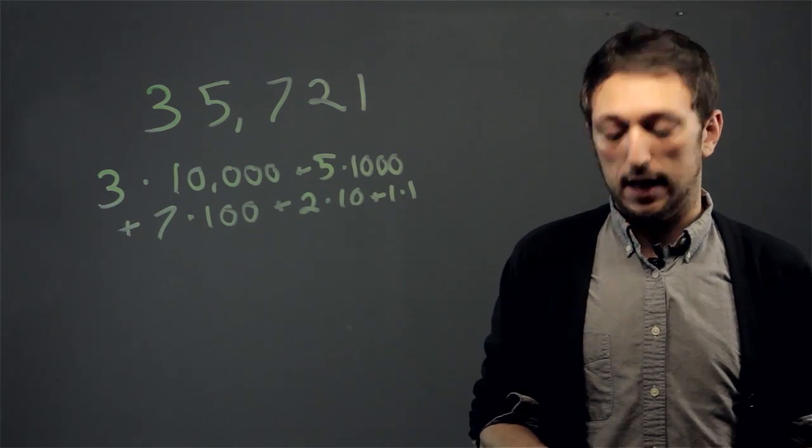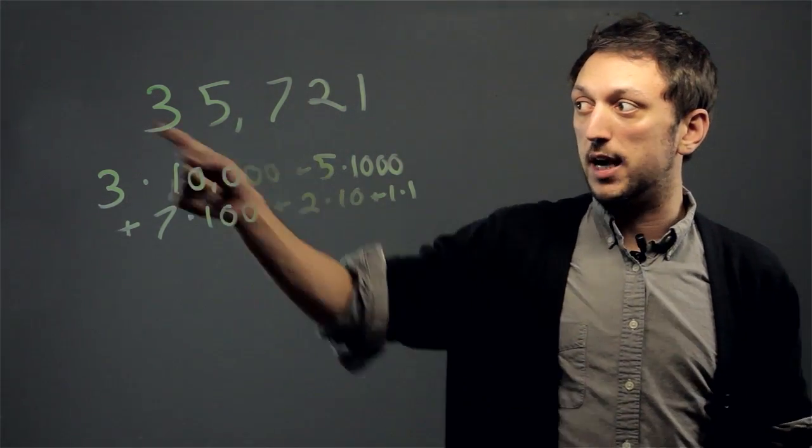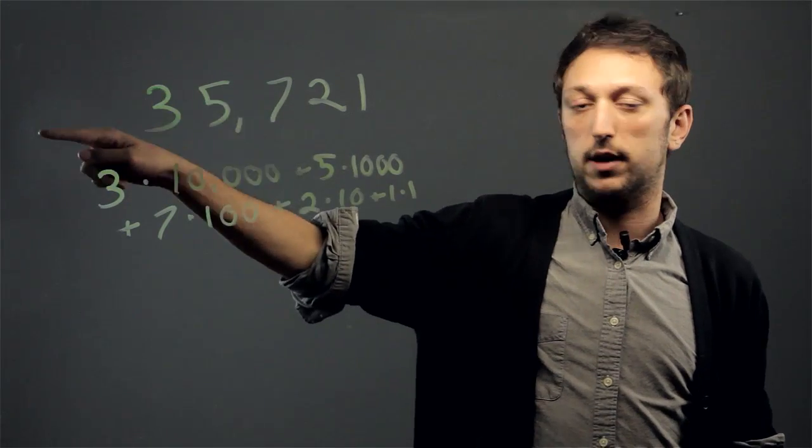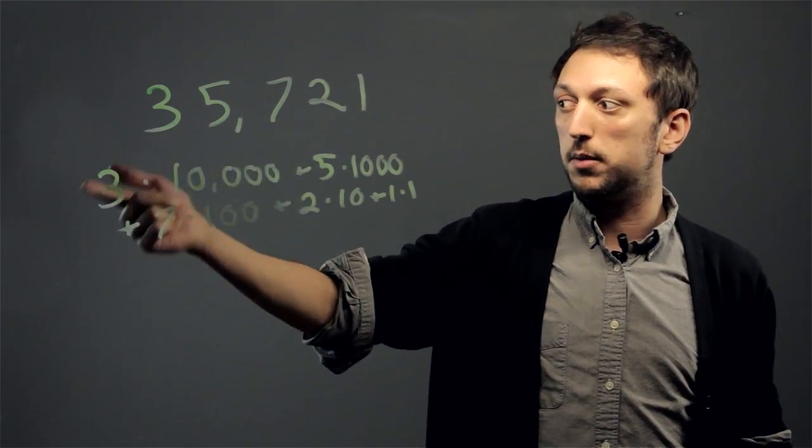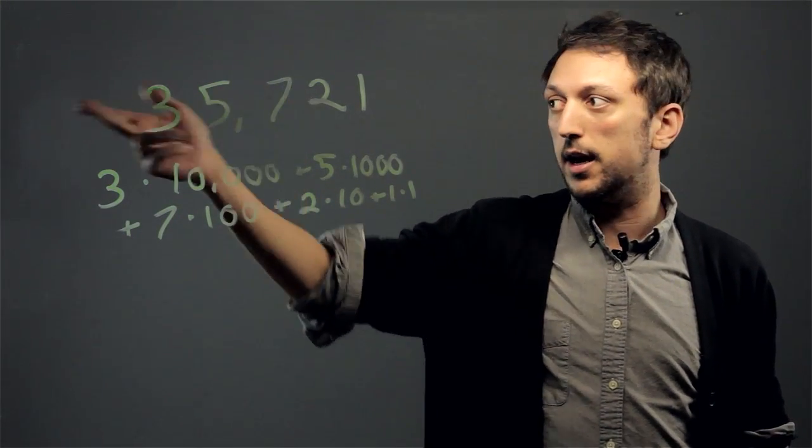And so you would take that as far as you needed it to go. If we had a six over here, then we'd say six times one hundred thousand, plus three times ten thousand, and on upwards.